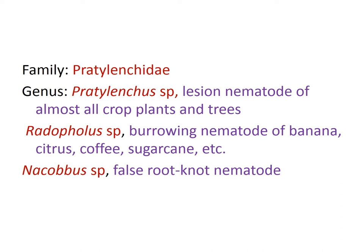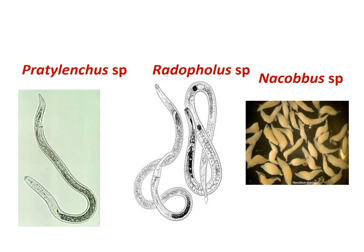Nacobbus is the false root knot nematode. The first picture is the Pratylenchidae species, the lesion nematode. Pratylenchus is a very common species. The next one is Radopholus similis — the male and female nematodes can be seen. The next one is the false root knot nematode, Nacobbus species.